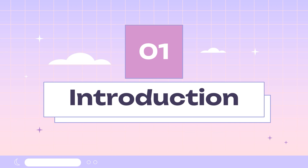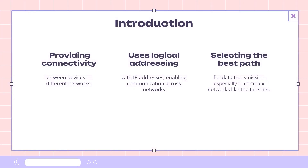Today we're going to dive into Layer 3, the network layer of the OSI model. Layer 3 plays a crucial role in providing connectivity between devices on different networks. It uses logical addressing with IP addresses, enabling communication across networks. Layer 3 is responsible for selecting the best path for data transmission, especially in complex networks like the Internet. Routers, operating at Layer 3, are the key players in directing traffic between networks.